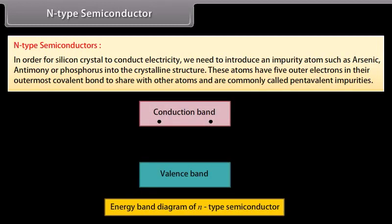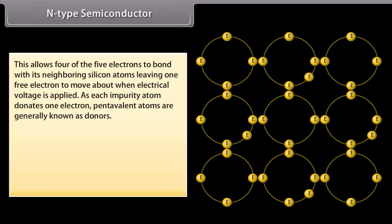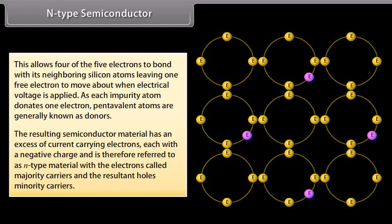In order for a silicon crystal to conduct electricity, we introduce an impurity atom such as arsenic, antimony, or phosphorus into the crystalline structure. These atoms have five outer electrons in their outermost covalent bond, and are commonly called pentavalent impurities. This allows four of the five electrons to bond with neighboring silicon atoms, leaving one free electron to move about when electrical voltage is applied. As each impurity atom donates one electron, pentavalent atoms are called donors. The resulting material has an excess of current-carrying electrons, each with a negative charge, and is referred to as N-type material, with electrons as majority carriers and holes as minority carriers.